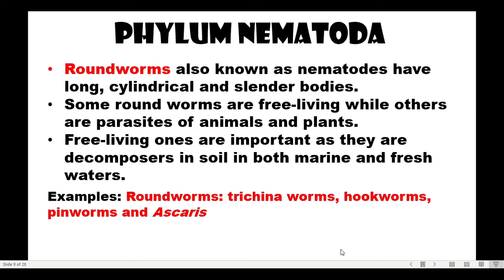Next, Phylum Nematoda. They are known as roundworms or nematodes. They have long, cylindrical, and slender bodies. Some roundworms are free-living, while others are parasites of animals and plants. The free-living ones are important as they are decomposers in soil, in both marine and fresh water. Examples include trichina worms, hookworms, and ascaris — the parasitic ones can be harmful.